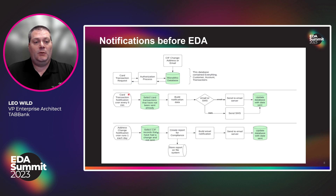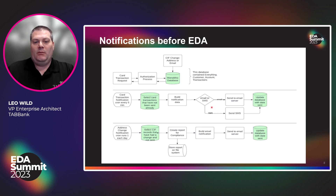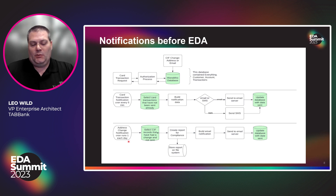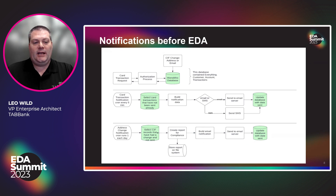In order to send notifications before we implemented EDA, we would have a CRON process run every five minutes every day to select transactions that hadn't been sent out to the customer yet. We would then build the notification information and send it out via email or SMS — whichever the customer chose — and update the database to indicate that the transaction alert had been sent. A similar process ran for address change notifications, but it was once a day. This was primarily a regulatory requirement built to generate a report for compliance to deliver physical letters to customers. We then bolted on an email notification option to send it to the email server and update the database that the notification was sent.